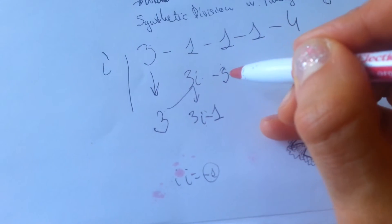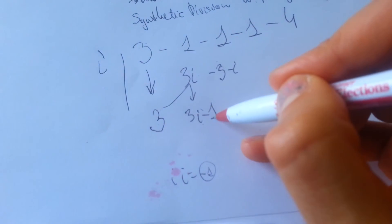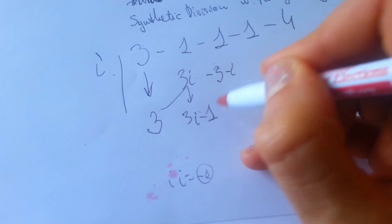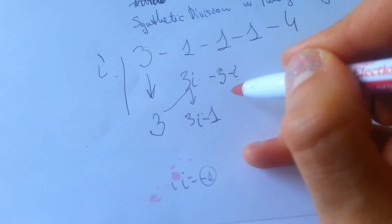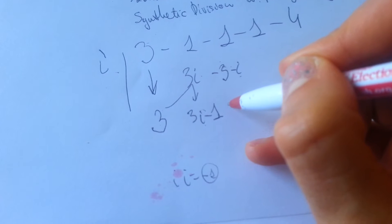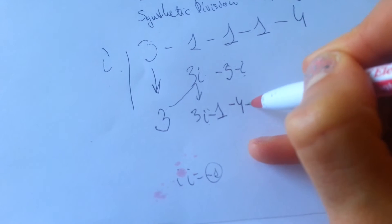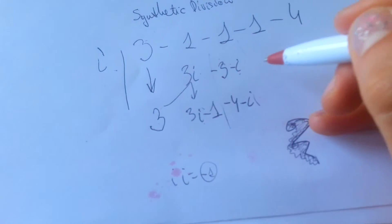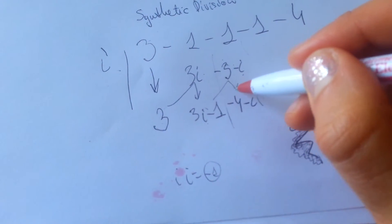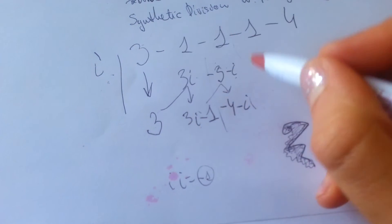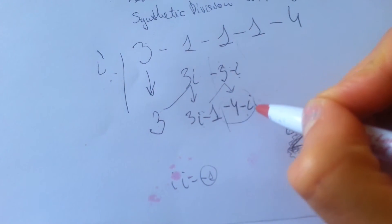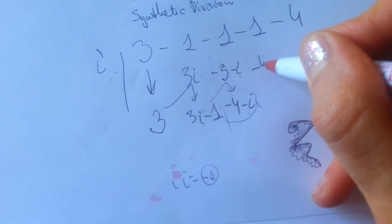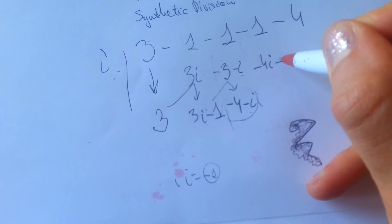So we get minus 3 minus 1, multiply 1 with i. Now minus 1 minus 3 minus 1, we get minus 4 minus i. Again, multiply i—this number—we will have minus 4i plus 1.